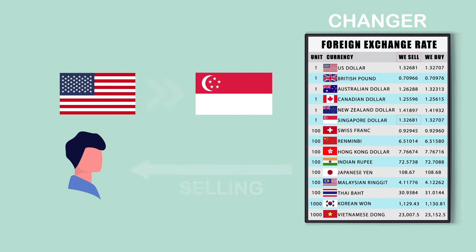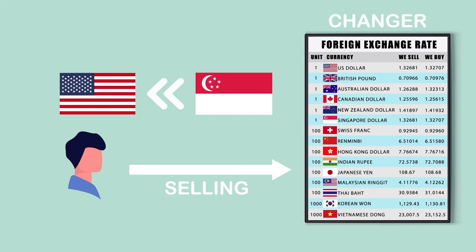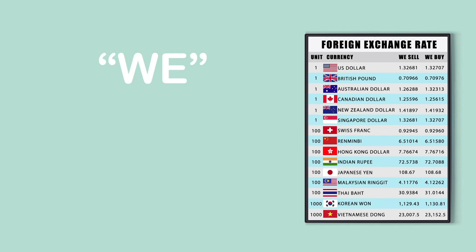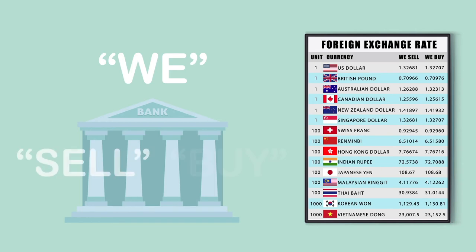On the other hand, if you are exchanging from Singapore dollars to US dollars, you are selling the Singapore dollars as a product to the changer. In this case, since they will be buying the Singapore dollars from you using the US dollar, the exchange rate will be listed as 'we buy.' Why do we use the word 'we'? That's because some money changers and banks prefer to just use the words 'sell' and 'buy,' so inserting 'we' makes the context clearer.